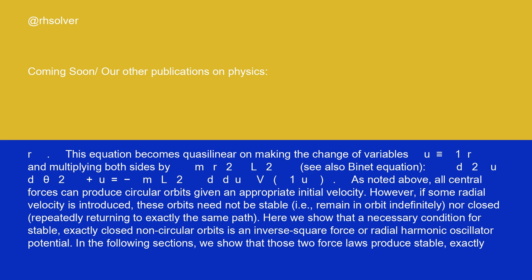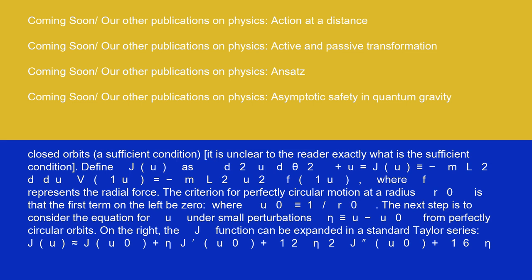As noted above, all central forces can produce circular orbits given an appropriate initial velocity. However, if some radial velocity is introduced, these orbits need not be stable, i.e. remain in orbit indefinitely, nor closed, repeatedly returning to exactly the same path. Here we show that a necessary condition for stable, exactly closed non-circular orbits is an inverse square force or radial harmonic oscillator potential. In the following sections, we show that those two force laws produce stable, exactly closed orbits, a sufficient condition.